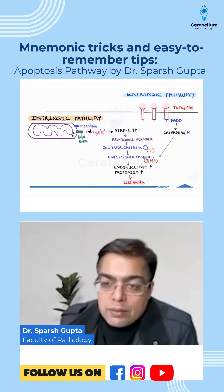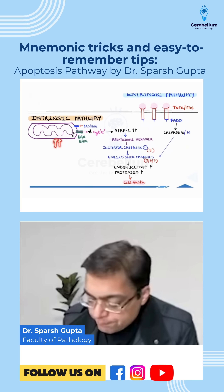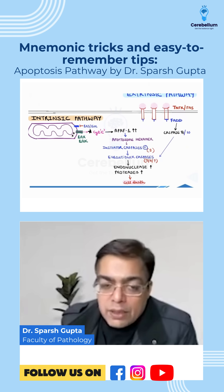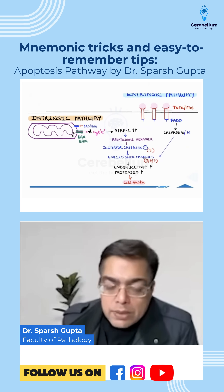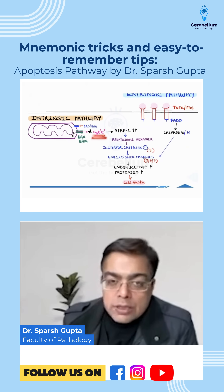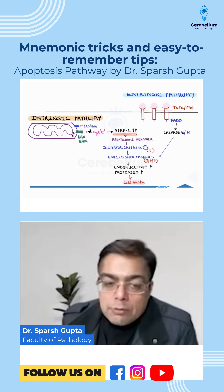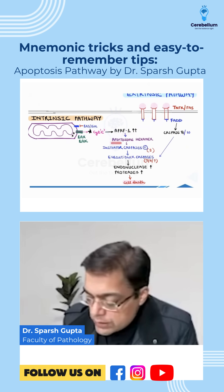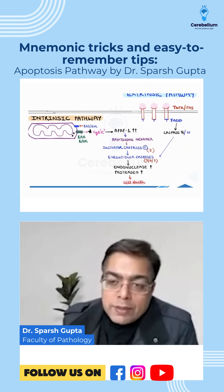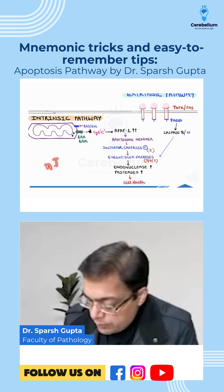In the intrinsic pathway, please recall that there is a very important role played by mitochondria. Whenever certain genes are activated, the mitochondria become leaky, and when it becomes leaky it releases cytochrome C. This cytochrome C is responsible for causing activation of Apaf-1, which is responsible for causing formation of a hexamer given the name apoptosome.